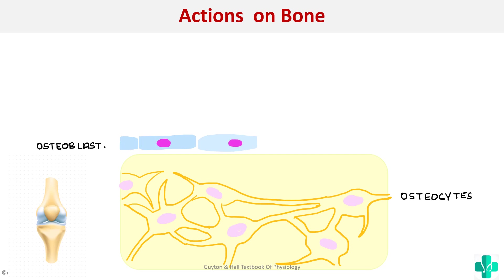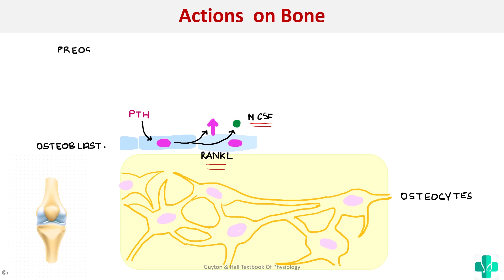When parathormone is released, it acts on these osteoblasts to cause increased expression of two important ligands: RANK ligand and macrophage colony-stimulating factor (MCSF). Pre-osteoclasts have receptors for these ligands — for RANK ligand as well as for MCSF.